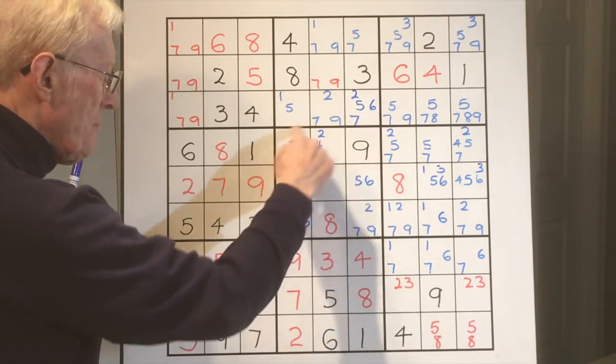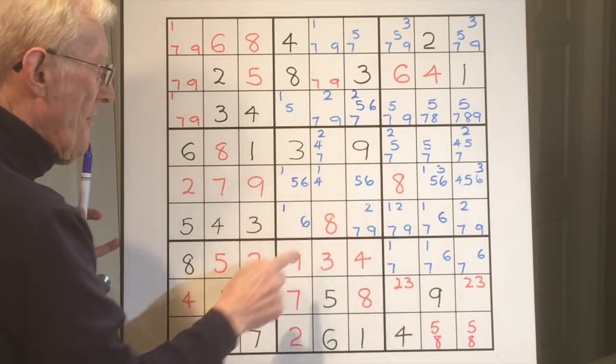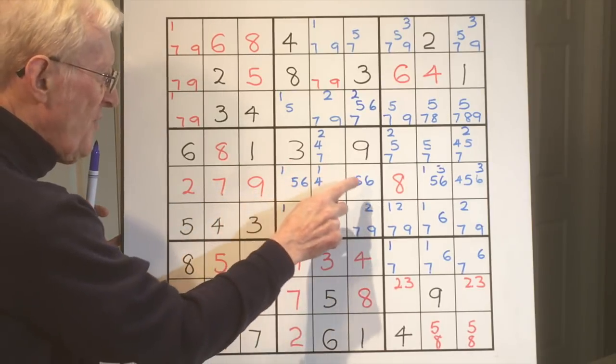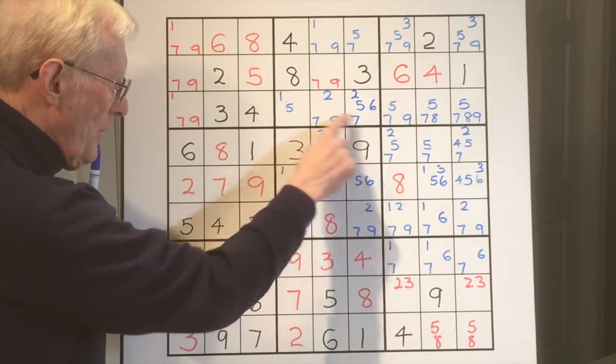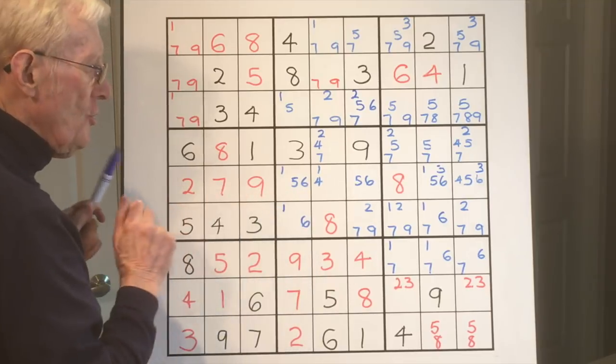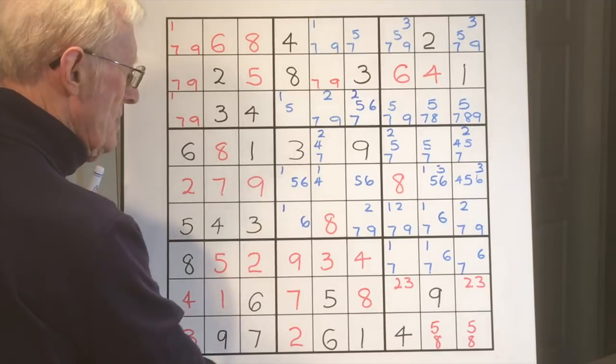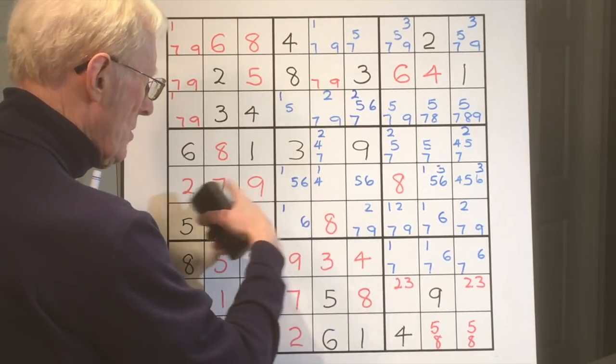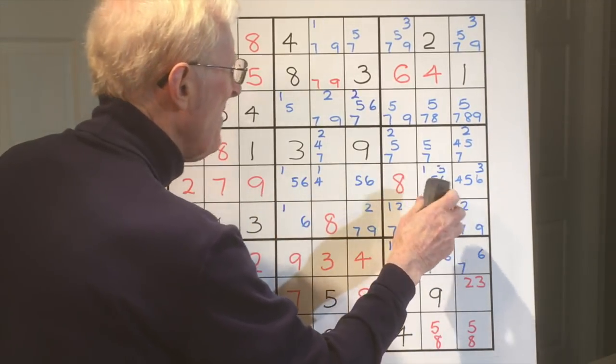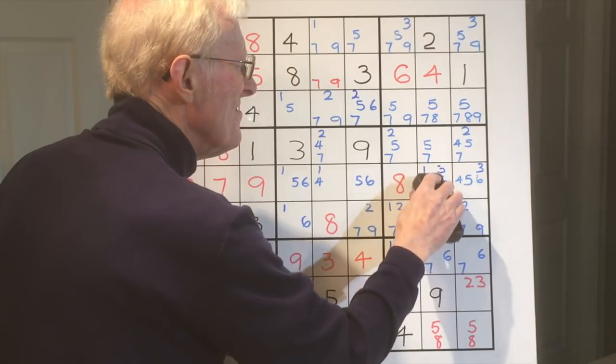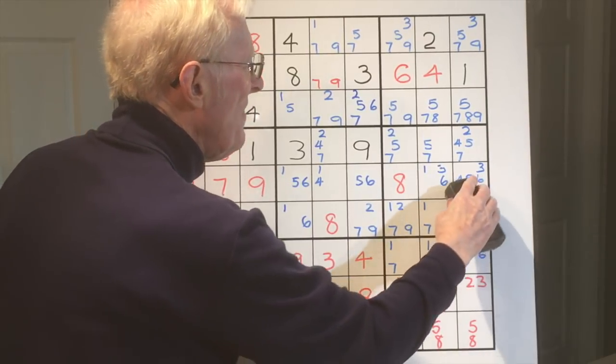You've got a five here and a five here, and there's no other five possibilities in this block. Therefore this five and this five being in a row in this block means that you can use the rule of exclusion and remove any other fives in that row. And if I go along here you'll see that there's a five here, and there's a five here.